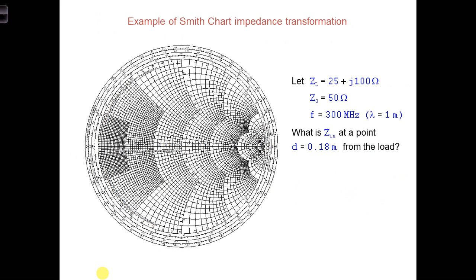Let's go through another example. Consider a transmission line terminated by a load of impedance ZL equals 25 plus j100 ohms. The transmission line's characteristic impedance is 50 ohms.